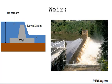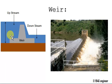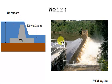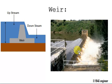Coming to weir. A weir is also a water storage structure which stores water up to very few feet in height. When water gets excess on the upstream side, it overflows the weir. The weir does not have a gate mechanism. You can observe the water flowing from the upstream side to the downstream side with no gate mechanism.